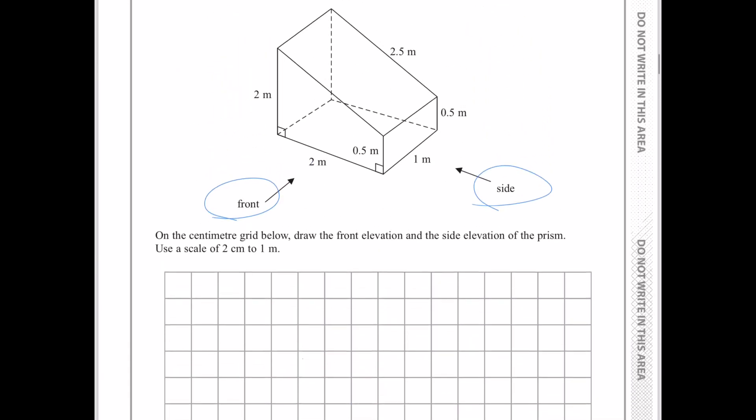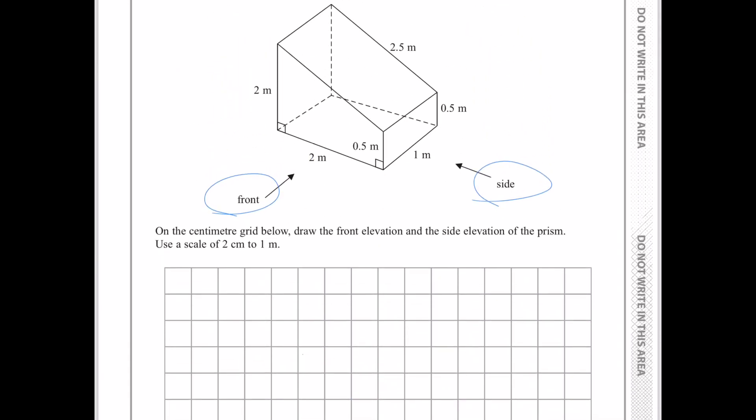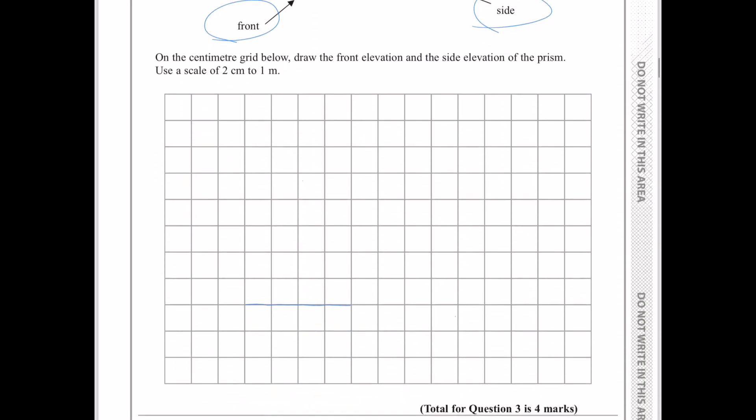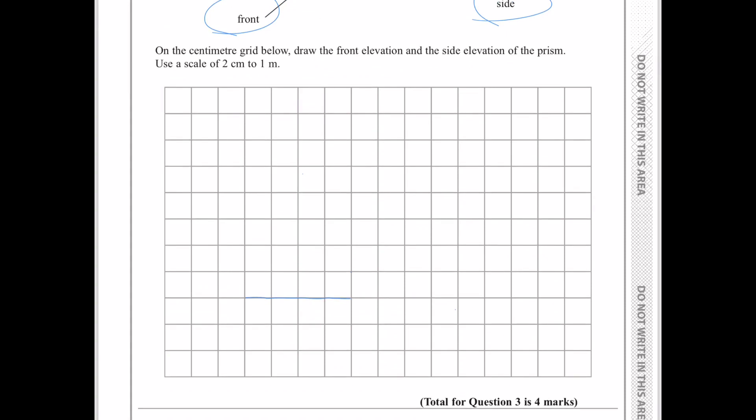Now, I am going to draw the parallel sides of the prism. So, the longer one is 2 metres, the same as the base. It would be 4 centimetres on the grid. 1, 2, 3, 4.